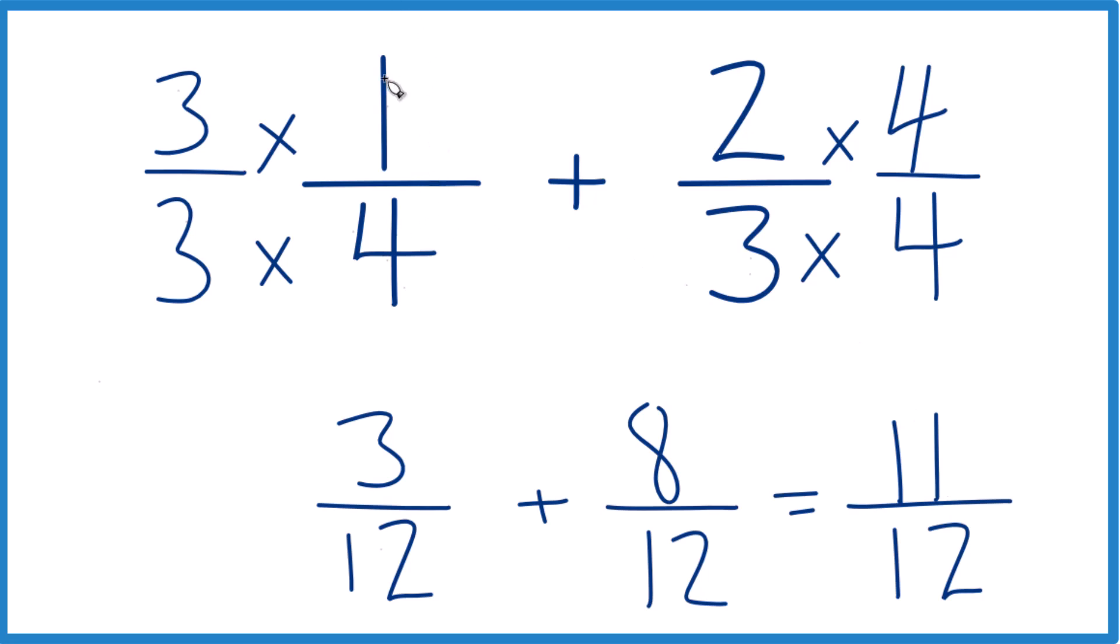So when we add 1 fourth plus 2 thirds, we get 11 twelfths. This is Dr. B adding 1 fourth plus 2 thirds. Thanks for watchin'.